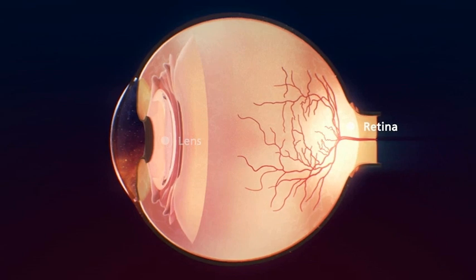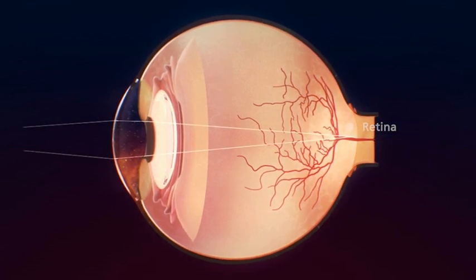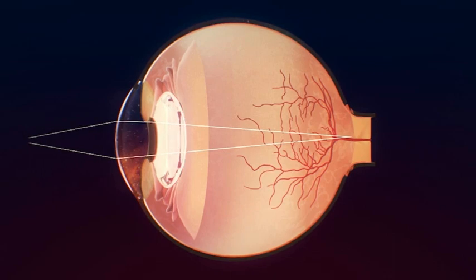The lens focuses light onto the retina by changing its shape. Muscles attached to the lens cause it to become thicker to focus on nearby objects and thinner to focus on distant objects.